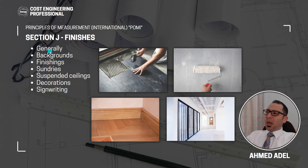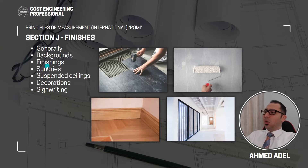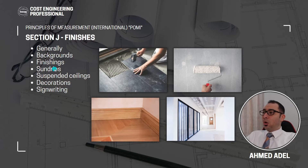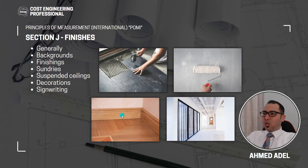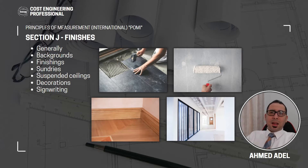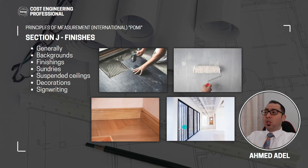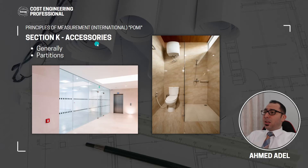Section J — Finishes. This includes backgrounds such as wall plaster, ceiling plaster, and screed below floor tiles, then the actual finishes: flooring, skirting, wall finishes, ceiling finishes, and elevation finishes — plaster, paint, wall tiles, gypsum board, suspended ceilings, decorations, and sign writing. Everything related to finishes in the project comes under Section J.